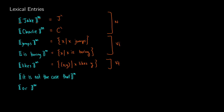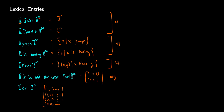For negation, the assignments change in terms of truth values. For 'or,' it's very similar — we take pairs. We can have a true and a true sentence, a true and a false, a false and a true, or a false and a false. Based on the truth table for 'or,' it's true if at least one disjunct is true, and false otherwise. This is our entry for the conjunction, specifically the word 'or.' We'll use these rules in a full example later — this is just how we assign lexical entries based on the type of word.